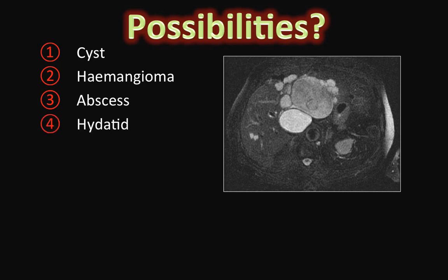Hydatid cysts have various appearances. They may be unilocular or multilocular, with or without septations. However, the commonest appearance is that of a larger cyst with internal daughter cysts arranged in the periphery. Knowing if the patient presents from an endemic region would help.